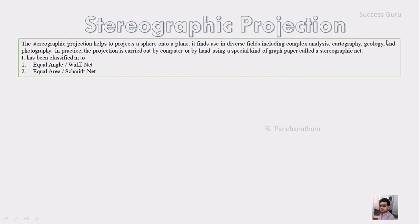The stereographic projection helps to project a sphere onto a plane — that is, a 3-dimensional object can be projected into a plane sheet with the help of stereographic projection. It finds use in diverse fields including complex analysis, cartography, geology, and even photography. In practice it can be carried out by computer or by hand with the help of a special graph called the stereographic net.